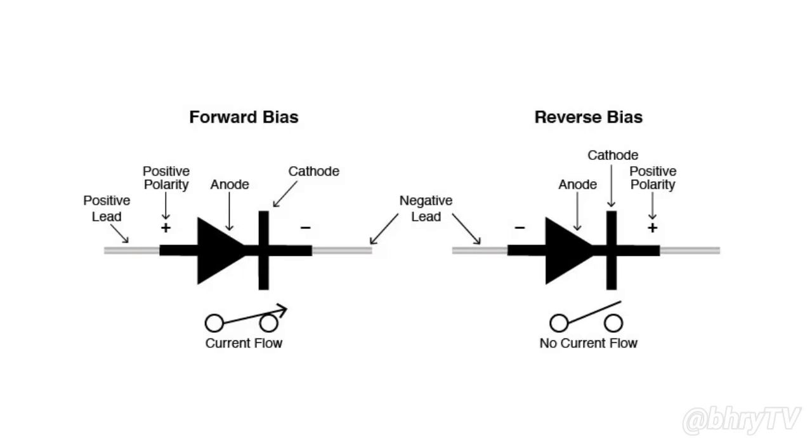A diode can easily allow or block the flow of electric current based on the way it is connected in a circuit.